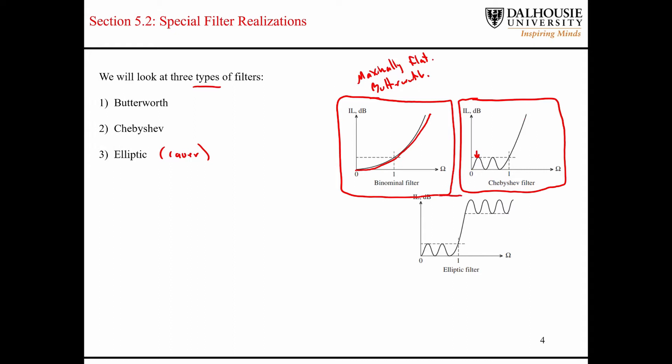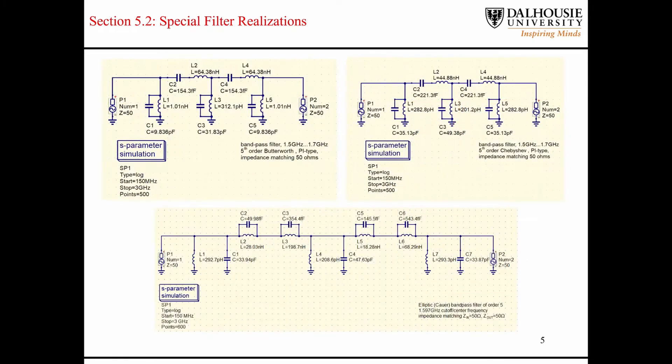The third filter type is elliptic filters, and you can see that they have ripple both in the stop and pass bands. We're going to be using QUCS in this course for amplifier design work and filter design work.